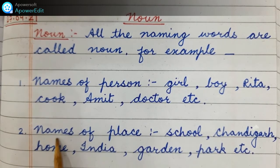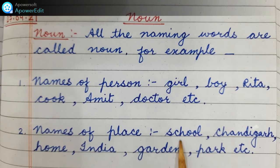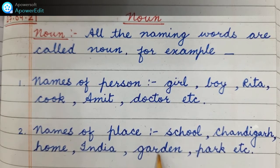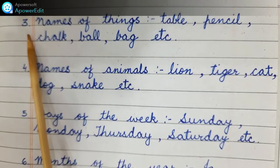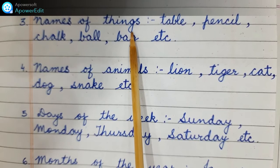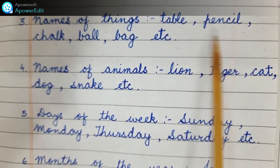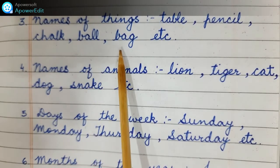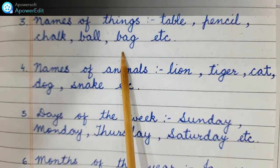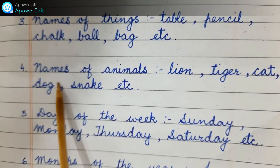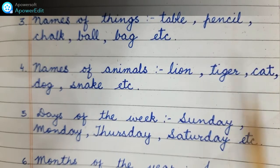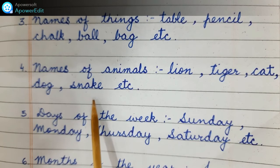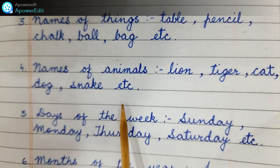Names of places: school, Chandigarh, home, India, garden, park. These are all names of places. Names of things: table, pencil, chalk, ball, bag. These are all names of things. Names of animals: lion, tiger, cat, dog, snake, etc. These are all names of animals.